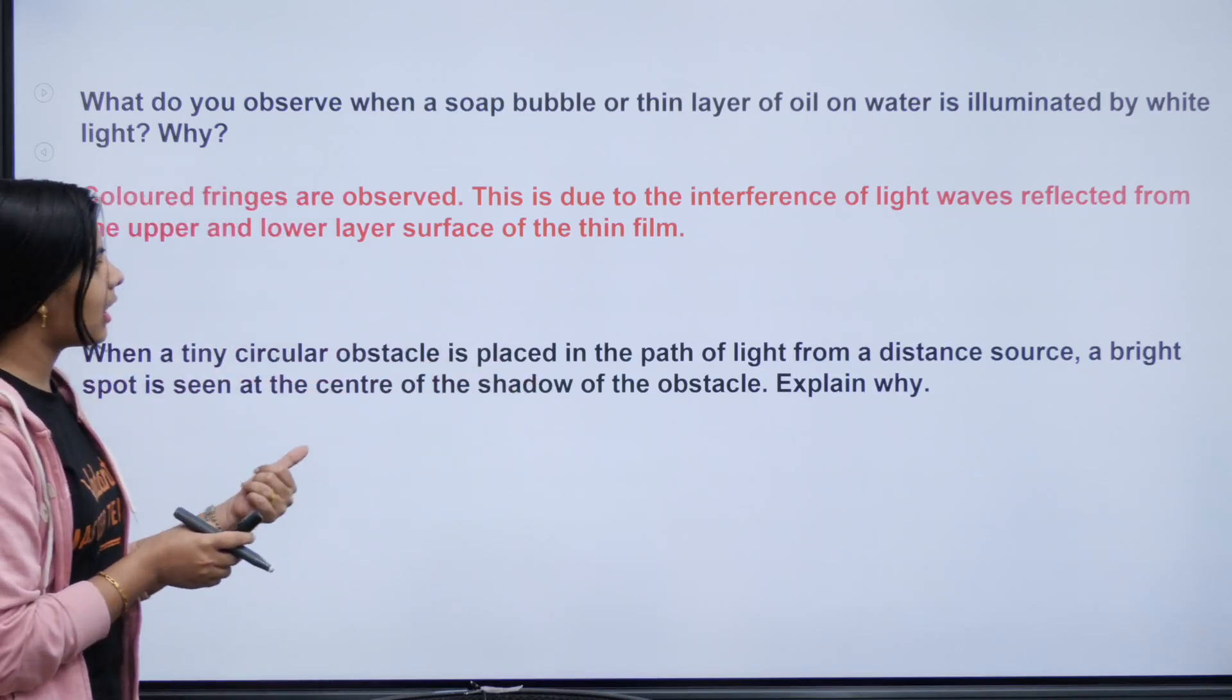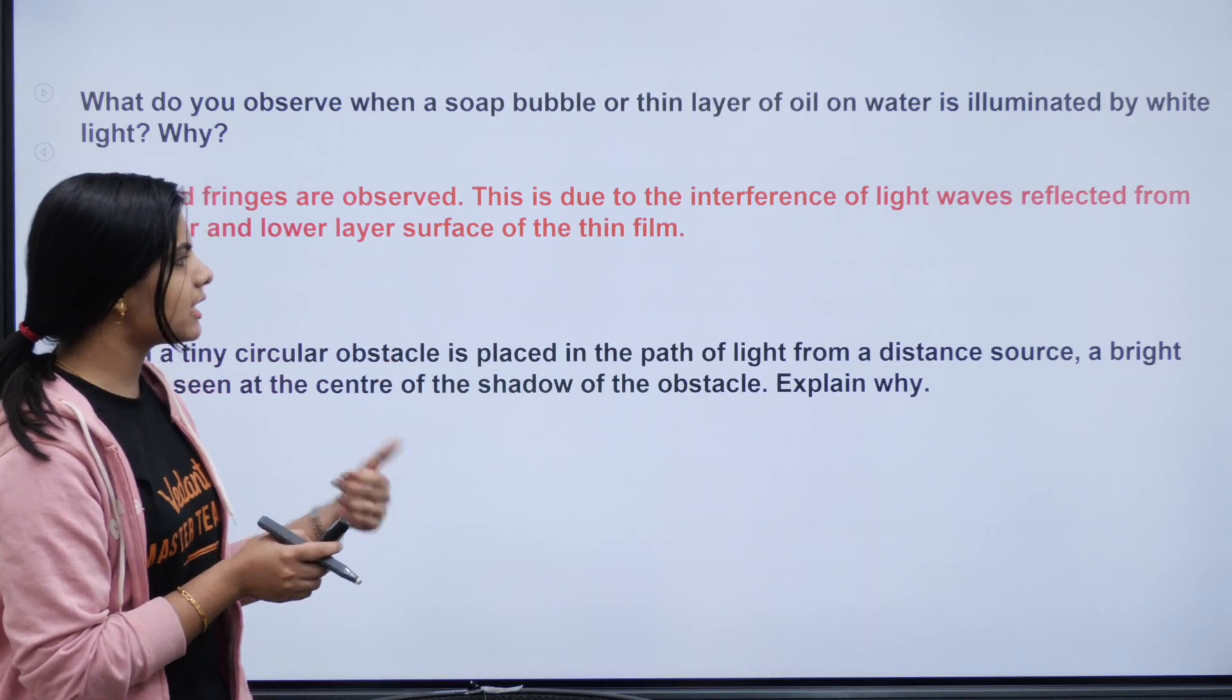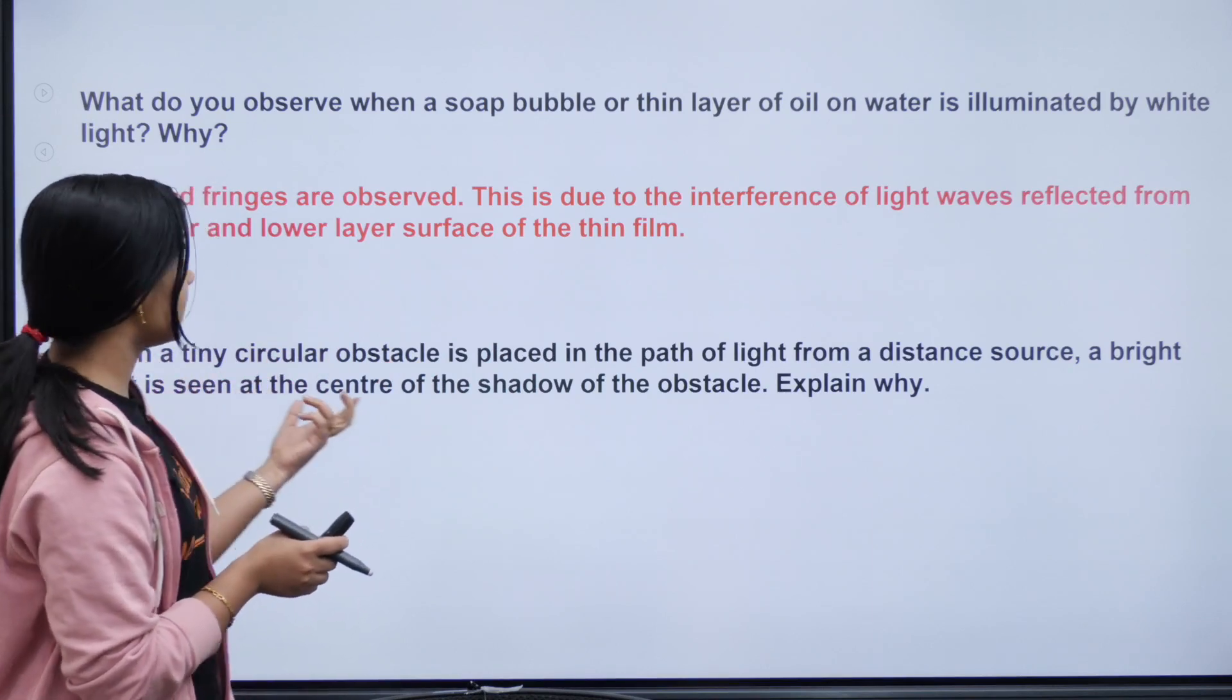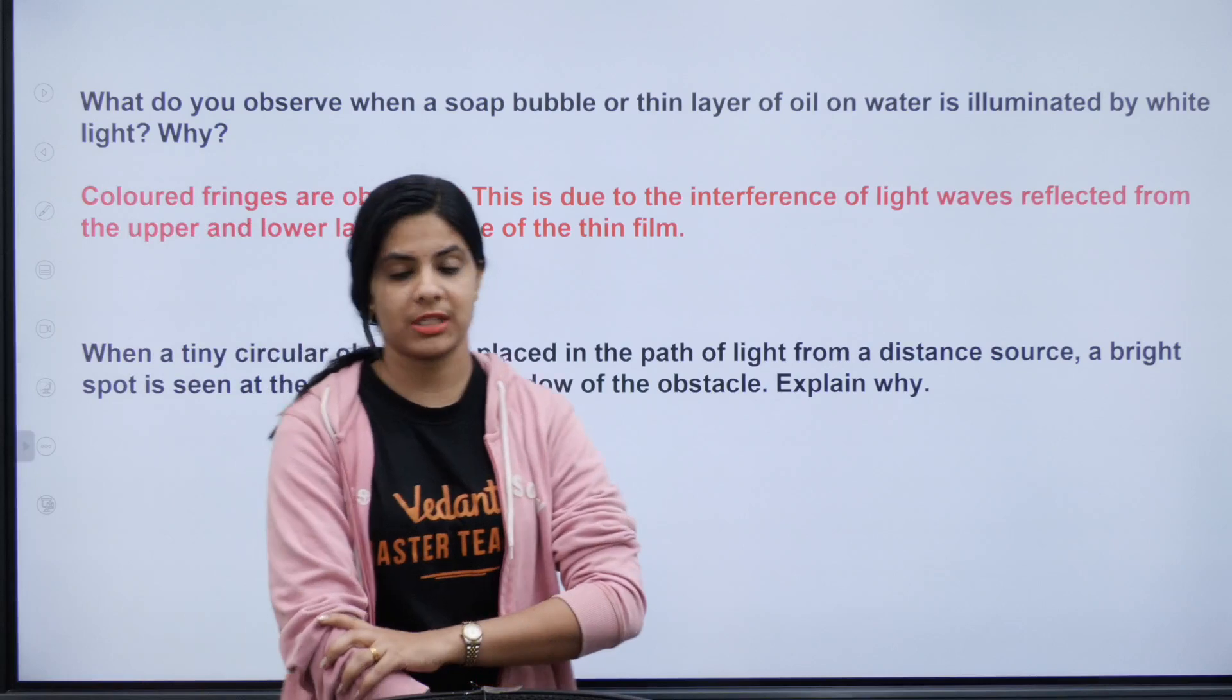Next, when a tiny circular obstacle is placed in the path of light from a distant source, a bright spot is seen at the center of the shadow of the obstacle. Explain why.